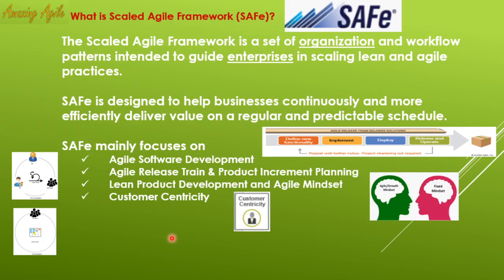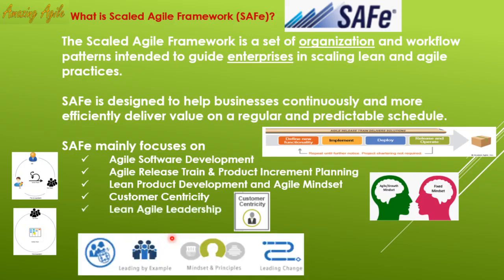Lean-agile leadership means the leaders of the organization must have an agile mindset and enforce agility to everyone. They themselves should be the role model of agility so that everyone can follow. They will also establish the SAFe principles and roadmap. If top management is not agile-focused, the organization cannot implement SAFe at any cost.